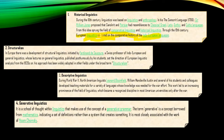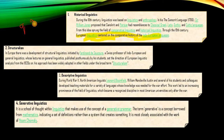European structuralist linguistics centered mainly on the comparative history of the Indo-European languages. Structuralism in Europe involved the development of structural linguistics initiated by Ferdinand de Saussure, who was the father of structuralism — a Swiss professor of Indo-European and General Linguistics.